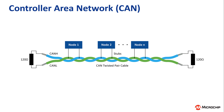First, a background on the CAN bus. CAN, or Controller Area Network, is a shared bus with multiple nodes. Each node can either transmit or receive on the bus.